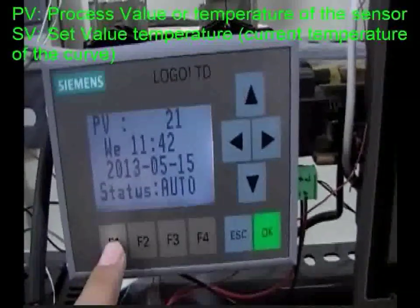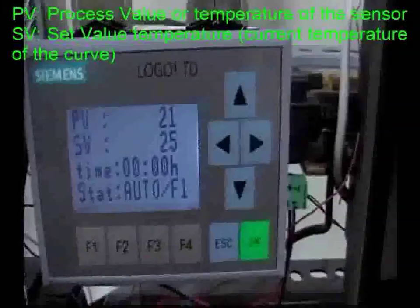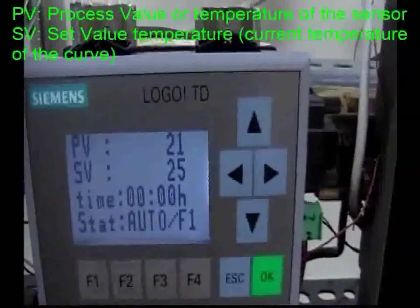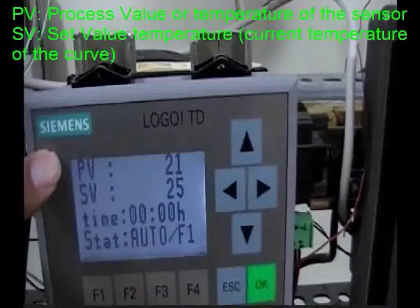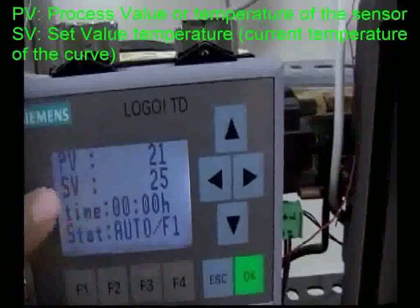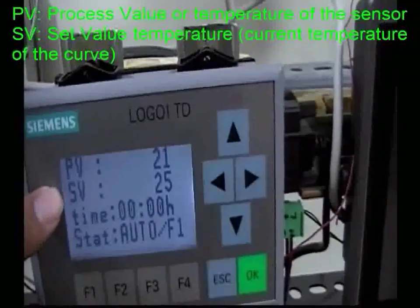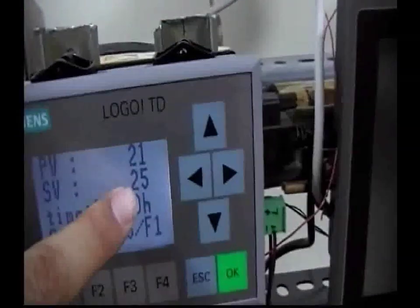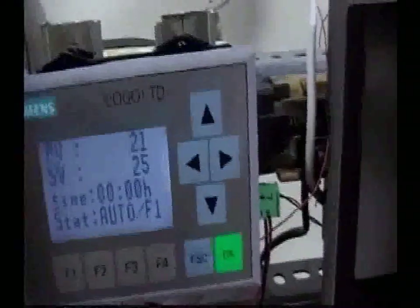When you push F1, as you see right now it says that the temperature sensor is sending 21 to the system, but the set temperature, the curve temperature, is 25.